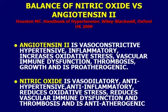Vascular biology is very complicated, but let's simplify it by looking at two major mediators of vascular dysfunction — the pro and the con. Angiotensin 2 is probably the most dangerous hormone available in the chronic setting to induce vascular disease. It causes vasoconstriction, hypertension, inflammation, oxidative stress, and thrombosis. It is a pro-atherogenic hormone.